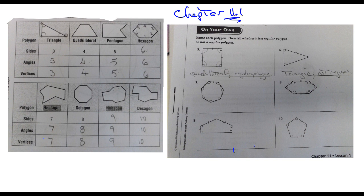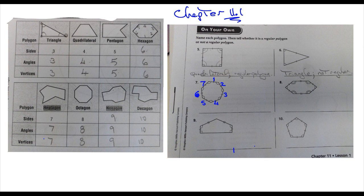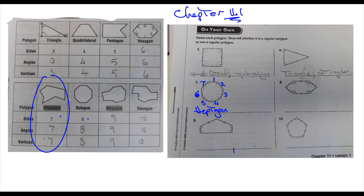Let's look at number seven. It says name each polygon and then tell whether it's a regular polygon or not a regular polygon. How do you figure out the name of a polygon? First off, how many sides does it have? Let's count: one, two, three, four, five, six, seven — so I see seven sides here. We can come over to the reference on page three in your book. What has seven sides? A heptagon. So the name of this is a heptagon — H-E-P-T-A-G-O-N.